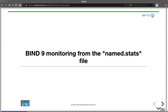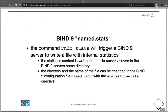Next is monitoring from the named stats file. The named stats file is a function that has been in BIND 9 from the beginning. With the command 'rndc stats', it triggers BIND 9 to write a statistics file to storage on the server. Usually, the statistics content is written to a file called named.stats, located in the BIND 9 service home directory. The name and path can be changed in the named.conf configuration file. The named.stats file is always appended — whenever you run rndc stats, the old content is not overwritten; new statistics are always added at the end.